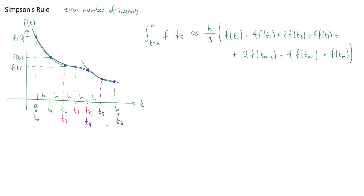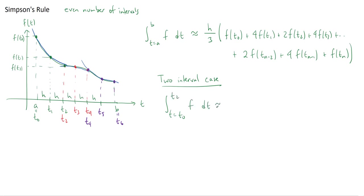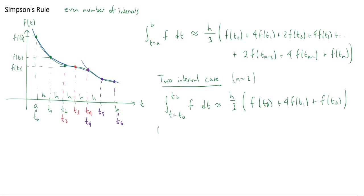If I was just doing two intervals — from t0 to t2 — Simpson's Rule says the integral from t0 to t2 of f dt is approximately h/3 times [f(t0) + 4·f(t1) + f(t2)]. Since n = 2, the point t_{n-1} = t1 is the same as the middle point, so we just get those three terms.